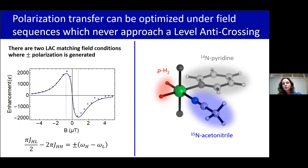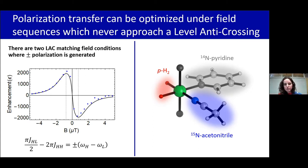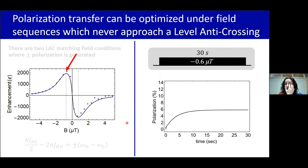Traditional continuous field experiments utilize level anti-crossings to match what field will facilitate population transfer between coupled spin states. The LAC matching condition for passing this population into positively or negatively magnetized states occurs when the resonance frequency difference between the hydrides and the target nucleus is on the order of the primary J couplings of the system. These matching fields are shown as vertical dashed lines, plotted along with experimental data for signal enhancement in a one Tesla NMR, overlaid with a numerically simulated magnetic field sweep. The level anti-crossing matching condition has been a really good predictor for which magnetic fields to use. Pulling out the optimal polarization transfer condition — occurring around minus 0.6 microtesla — we can see the polarization build up over time in a simulated trace, and we get very reasonable polarization transfer under these conditions.